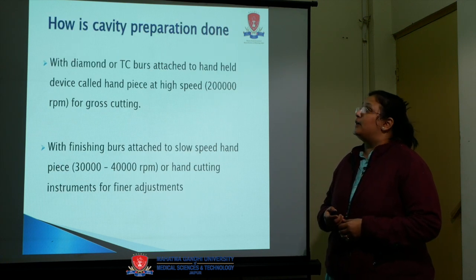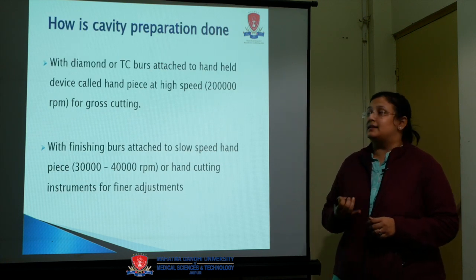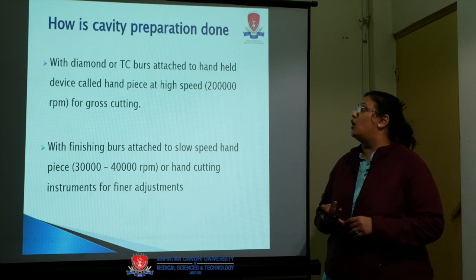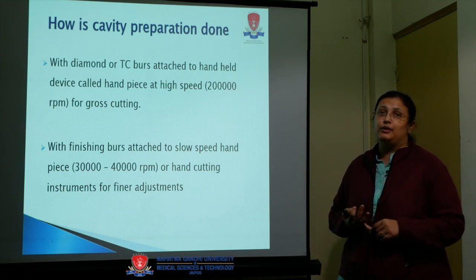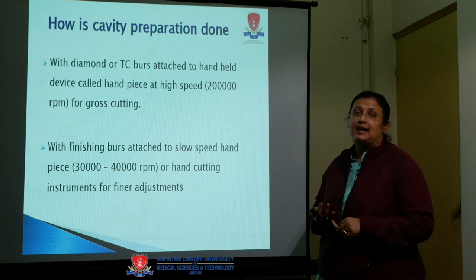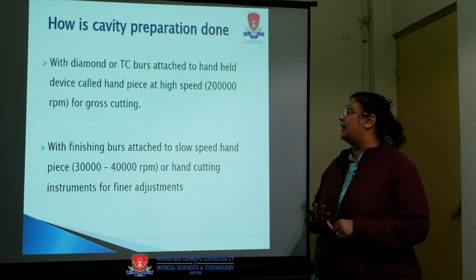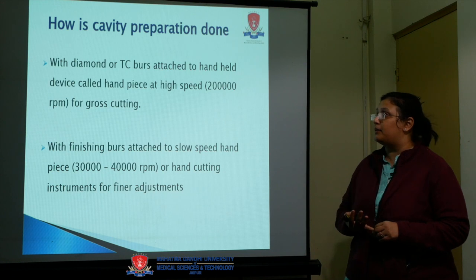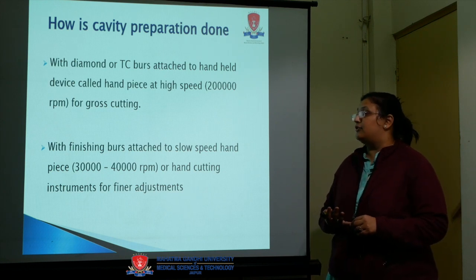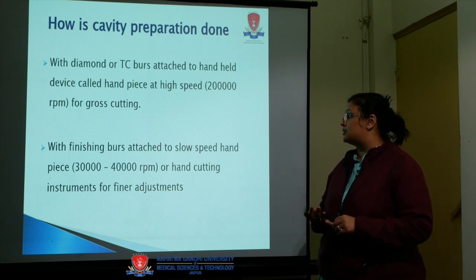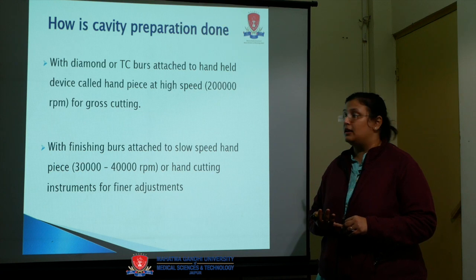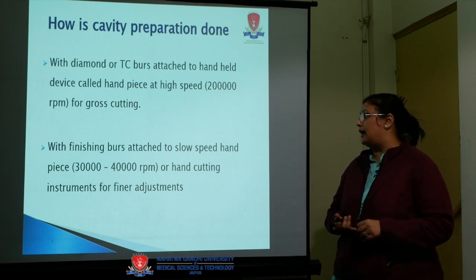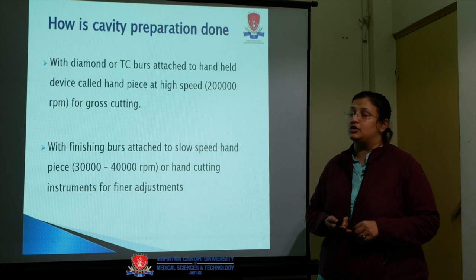Cavity preparation is done using diamond burs or tungsten carbide burs attached to a handpiece at high speed — approximately 200,000 rpm — for gross cutting, with finishing burs attached to a slow-speed handpiece at around 30,000 to 40,000 rpm, or hand-cutting instruments for finer adjustments.